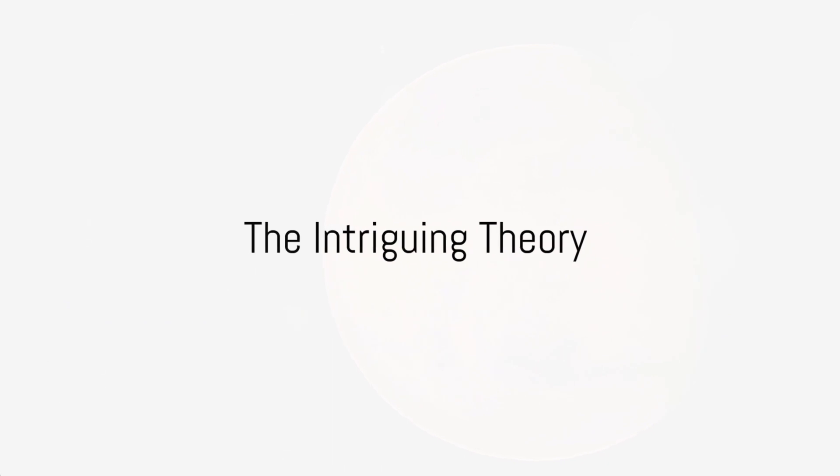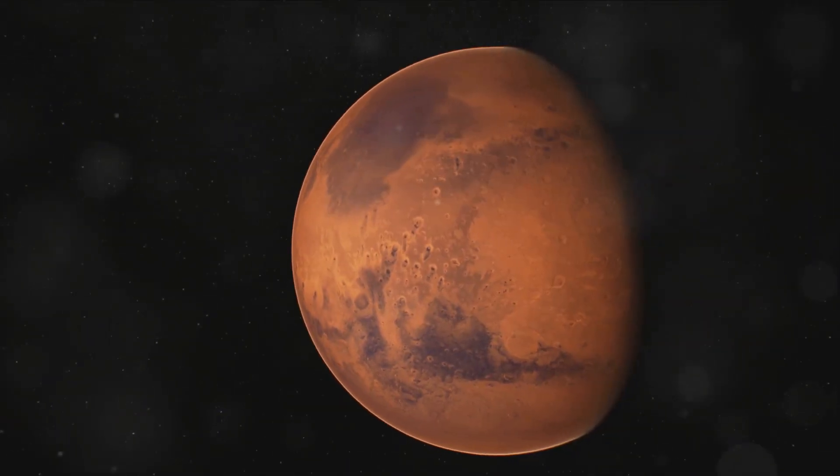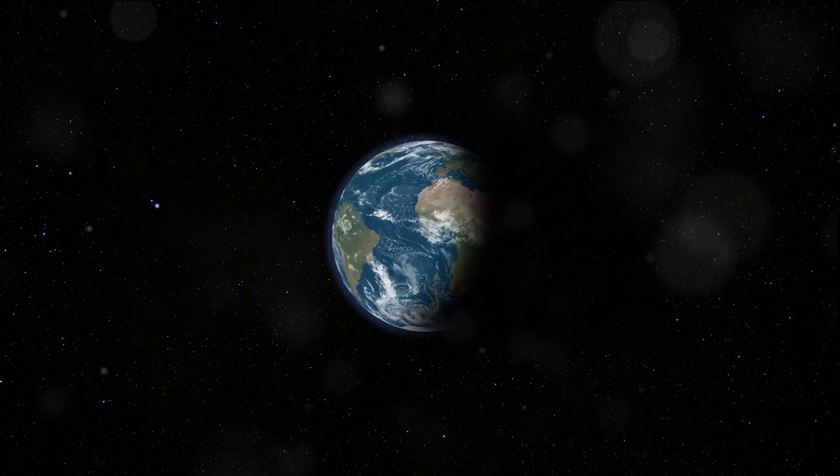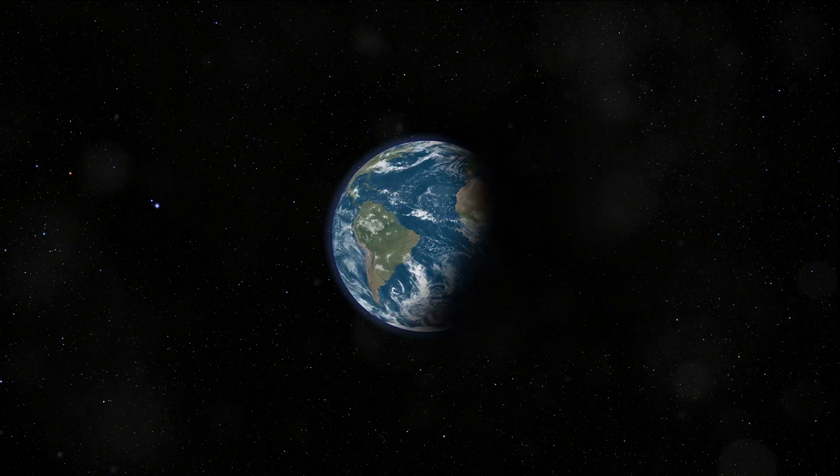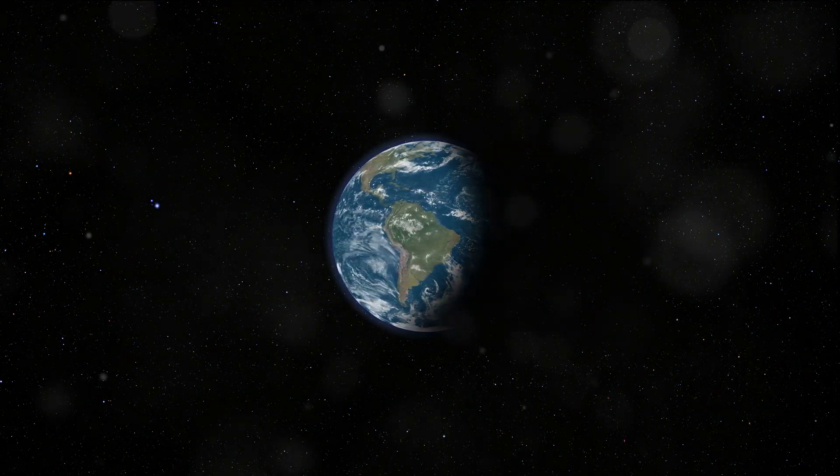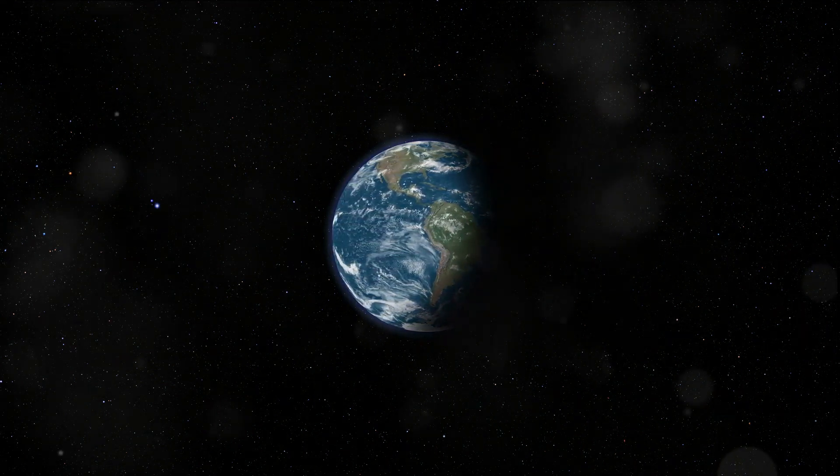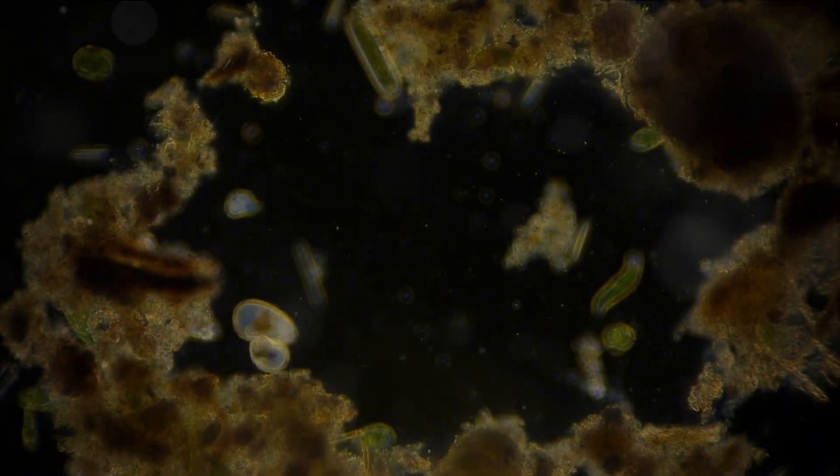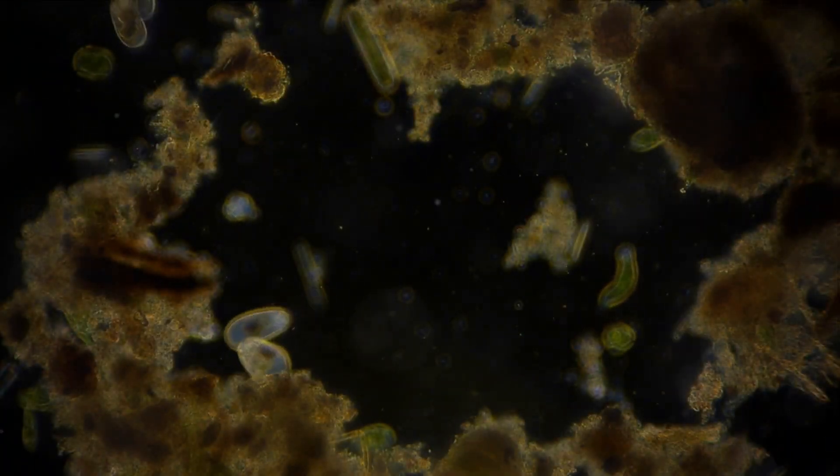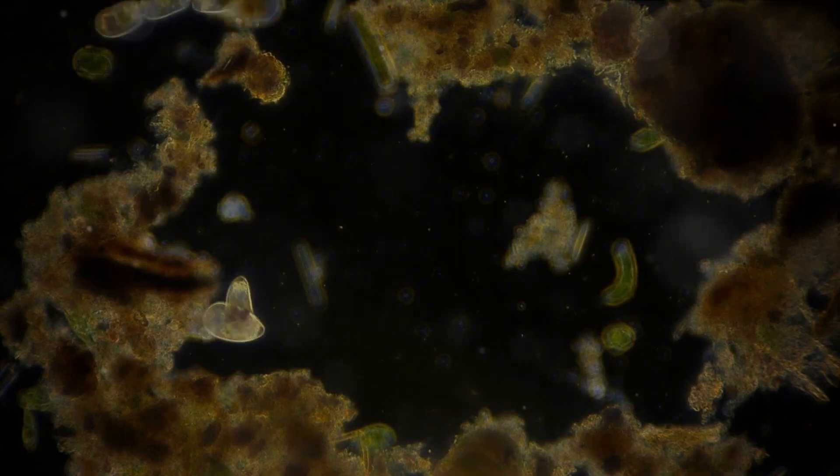To recap, this video has explored the intriguing theory that Earth may have been terraformed by Martians. We examined the simultaneous events of Mars losing its atmosphere and water, and the great oxidation event on Earth. We also contemplated the possibility of Martian microbes migrating to Earth and kick-starting the oxygenation of our atmosphere.